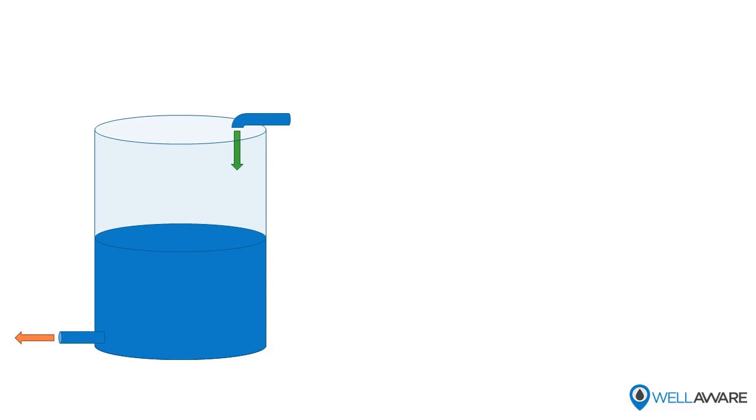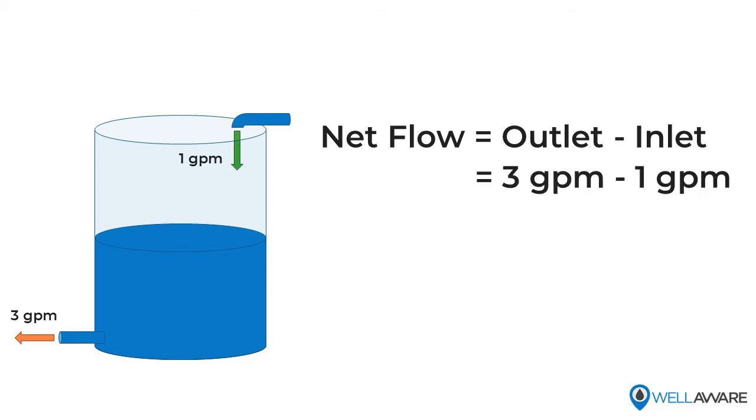Now let's take a look at the flow rates. To calculate how many days until empty, we first need to know the net flow - that is, the difference between the inlet flow and the outlet flow. In this case, the net flow is equal to the outlet flow minus the inlet flow. So for example, if we had an inlet flow rate of 1 gallon per minute and an outlet flow rate of 3 gallons per minute, our net flow rate would be 2 gallons per minute out of the tank.